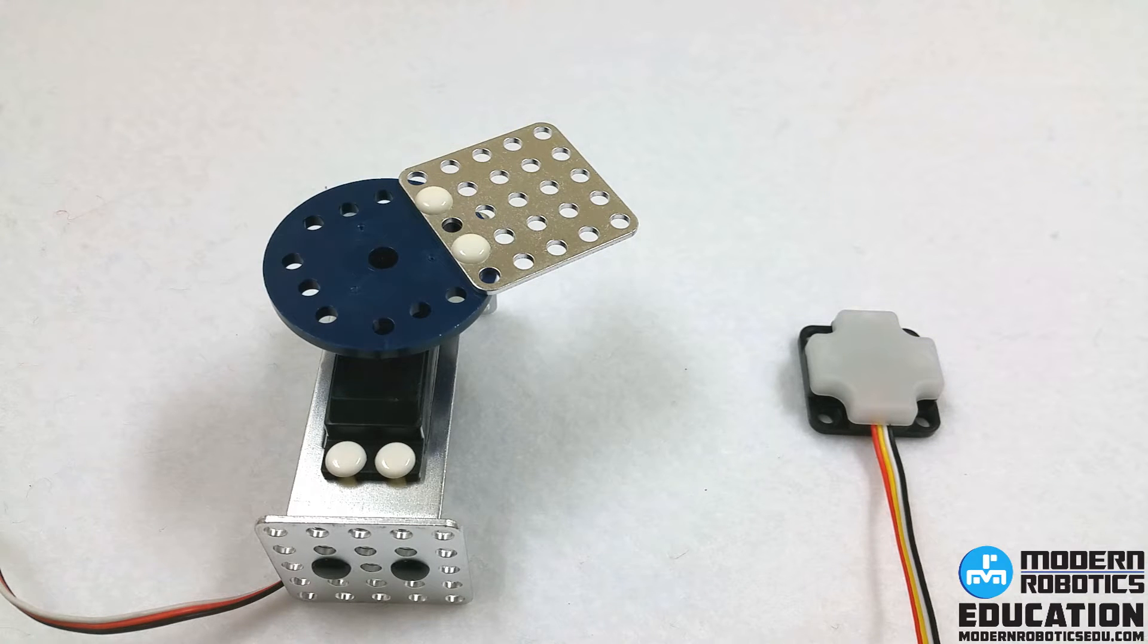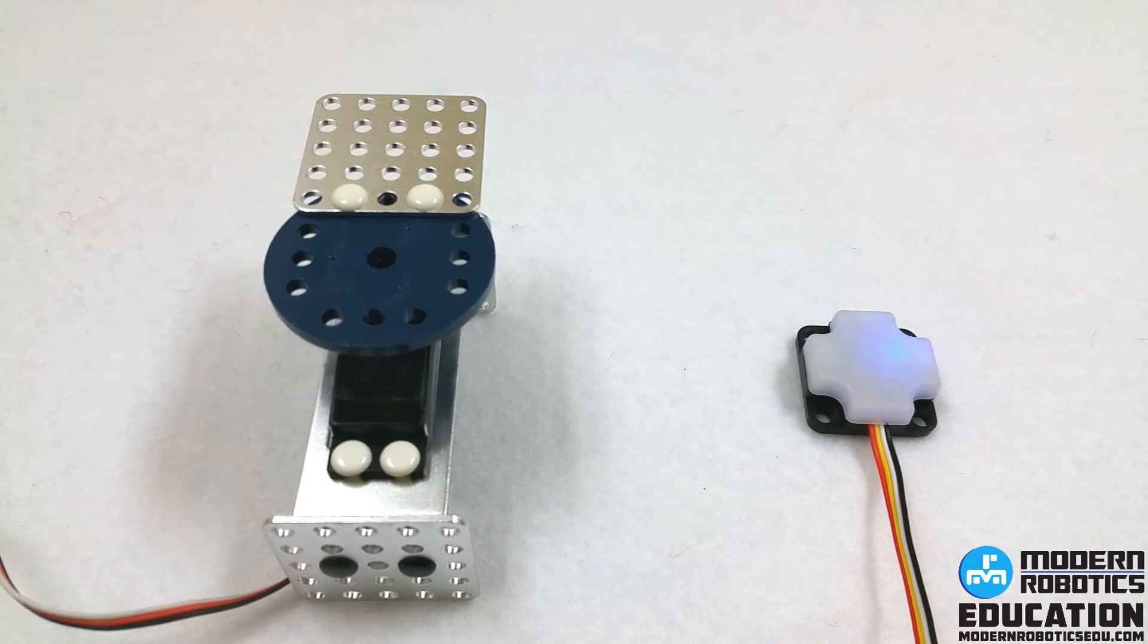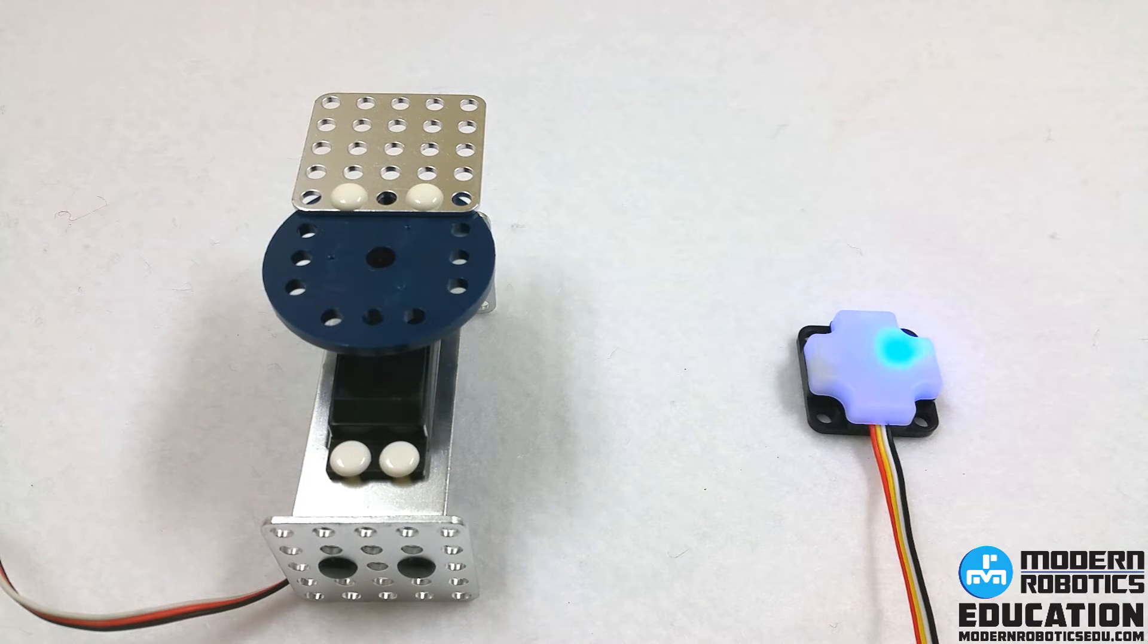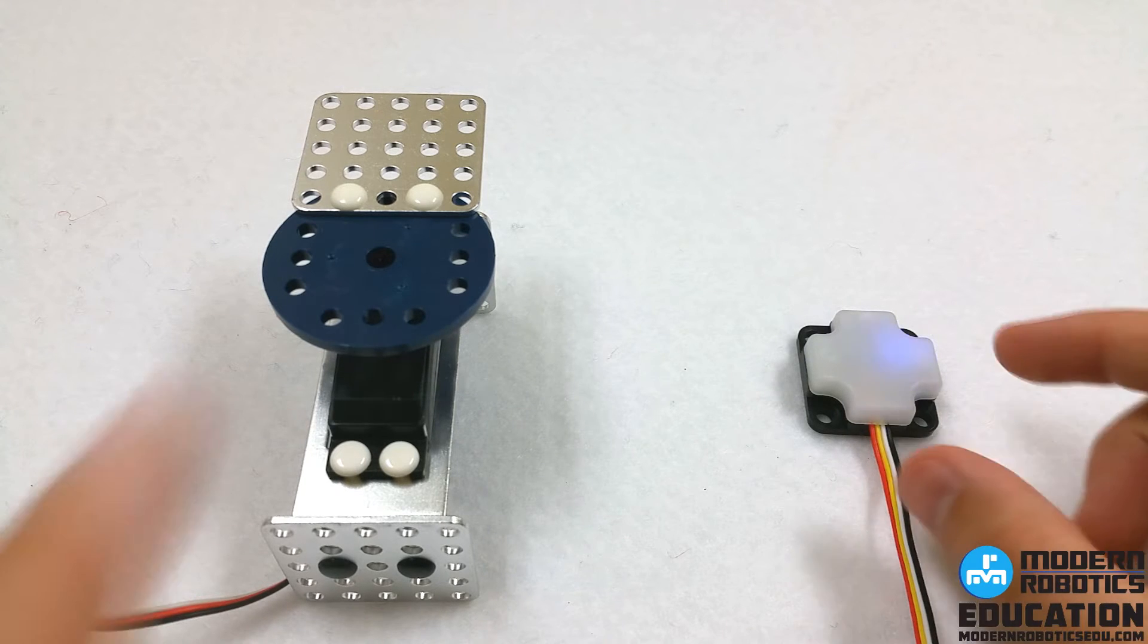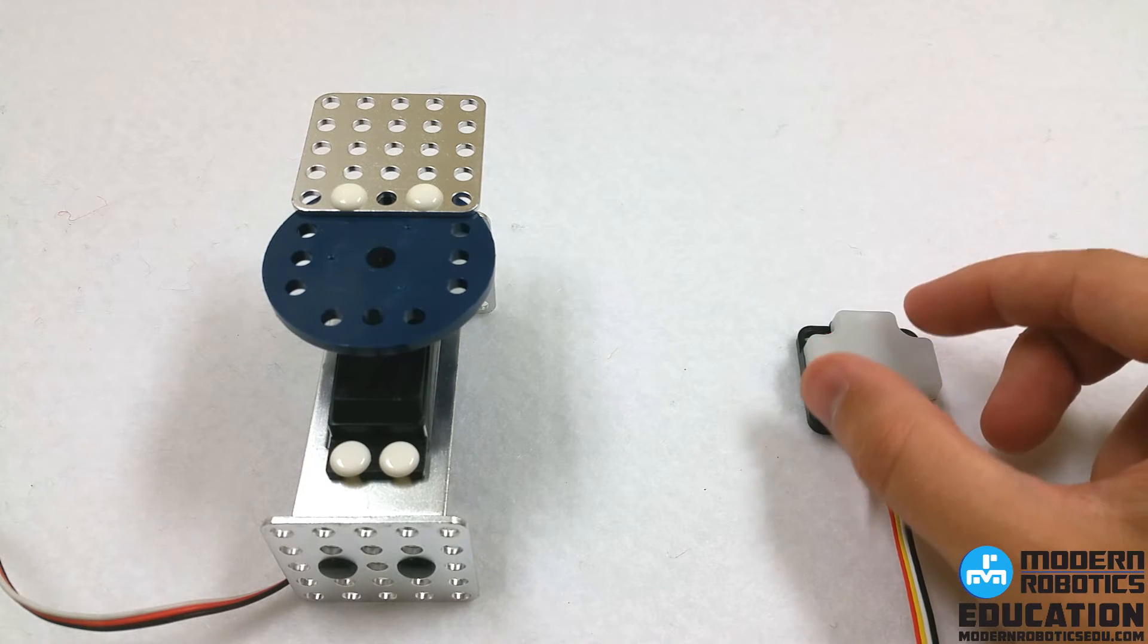We're just going to feed in the gyro data, the absolute heading or the Z accumulated, and then send that out to the servo after we run it through an equation. When I initiate here, it's going to calibrate, and then when I hit play, it'll start displaying values and let me move the gyroscope to move the servo.